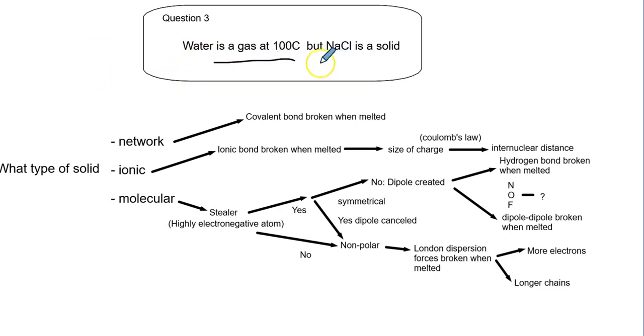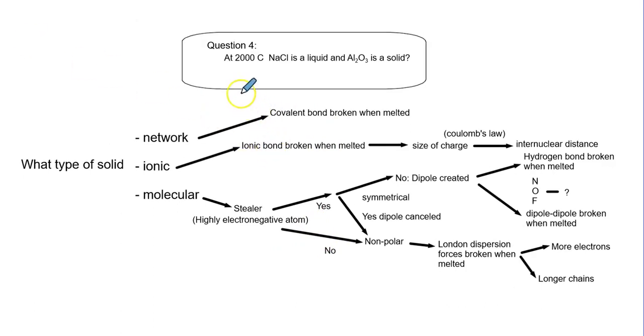Water is a gas at 100 but sodium chloride is a solid. Water goes down to hydrogen bonding, but ionic compounds break ionic bonds which are much stronger bonds.